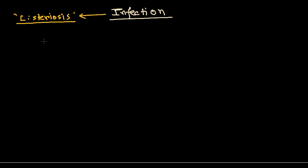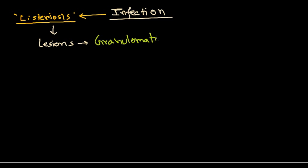Listeriosis involves a variety of focal lesions, though these are less frequently seen. One type is granulomatous skin lesions. These are the kinds of focal lesions we are going to see — granulomatous or granulomatous skin lesions and also other types of focal lesions.